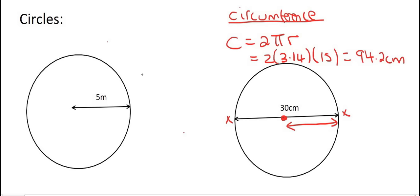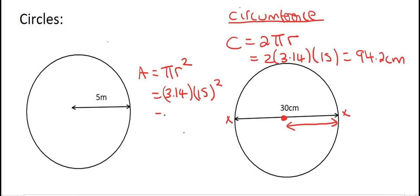To work out the area, we know that's pi r to the power of 2, so that's going to be 3.14. The radius is 15, to the power of 2. That gives us 706.5 centimeters squared.